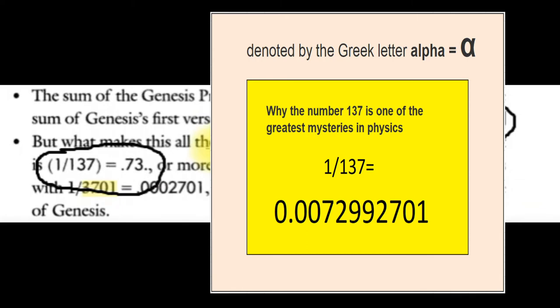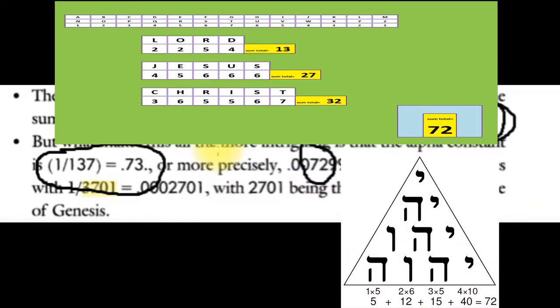The Hebrew value for the tetragrammaton letters, the four letters, they form a triangle having a value of 72. The Hebrew letter gematria value sum total of 72.